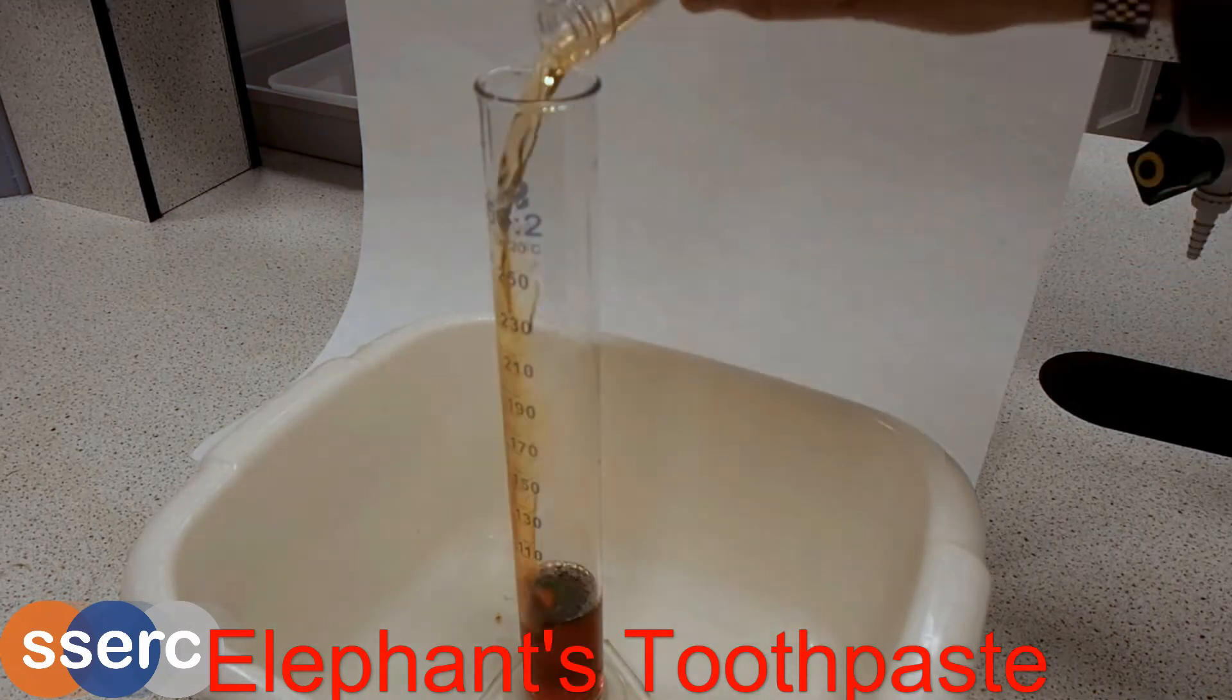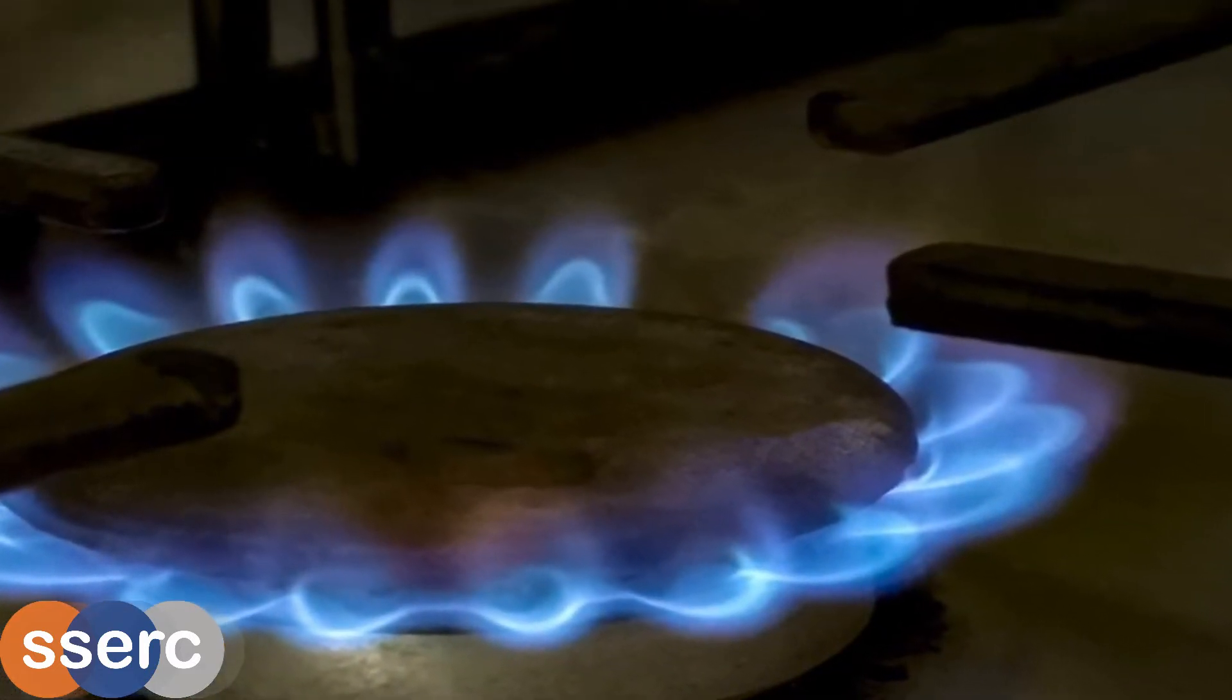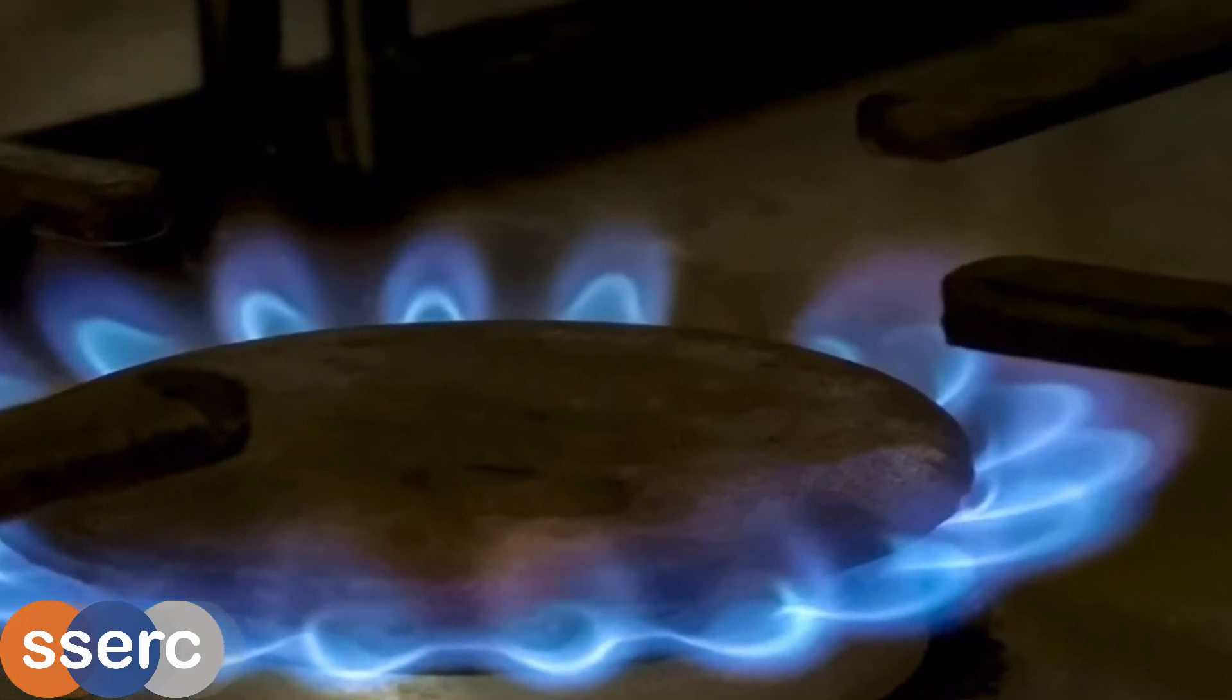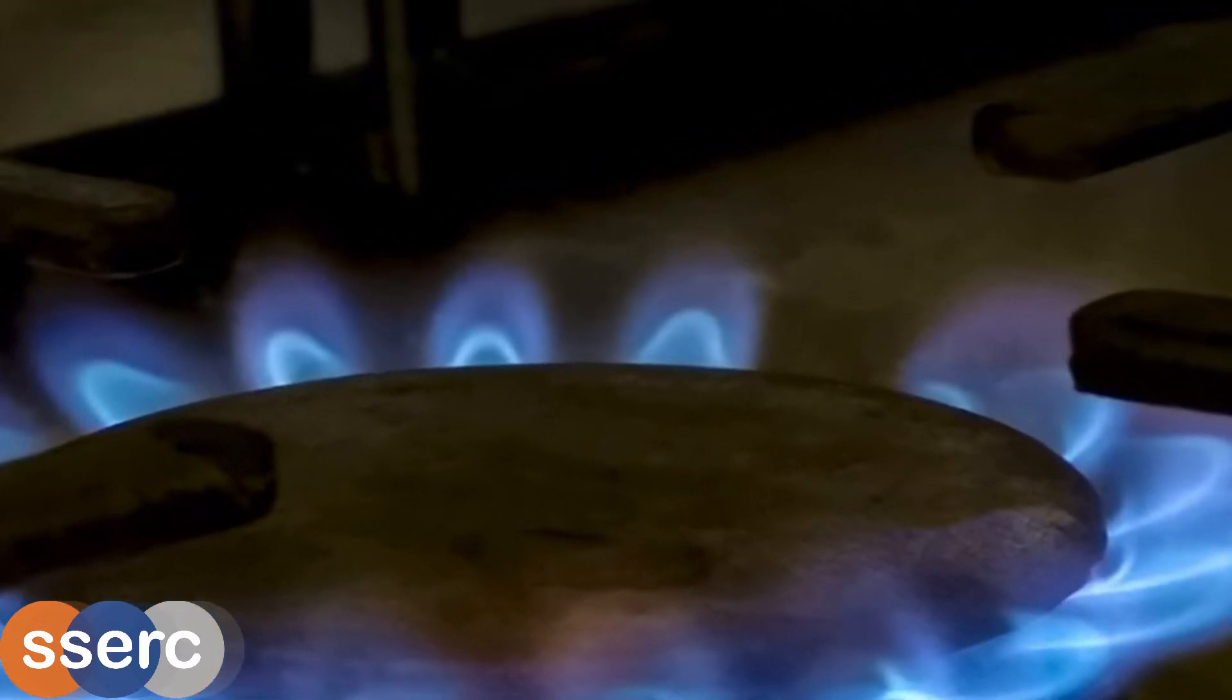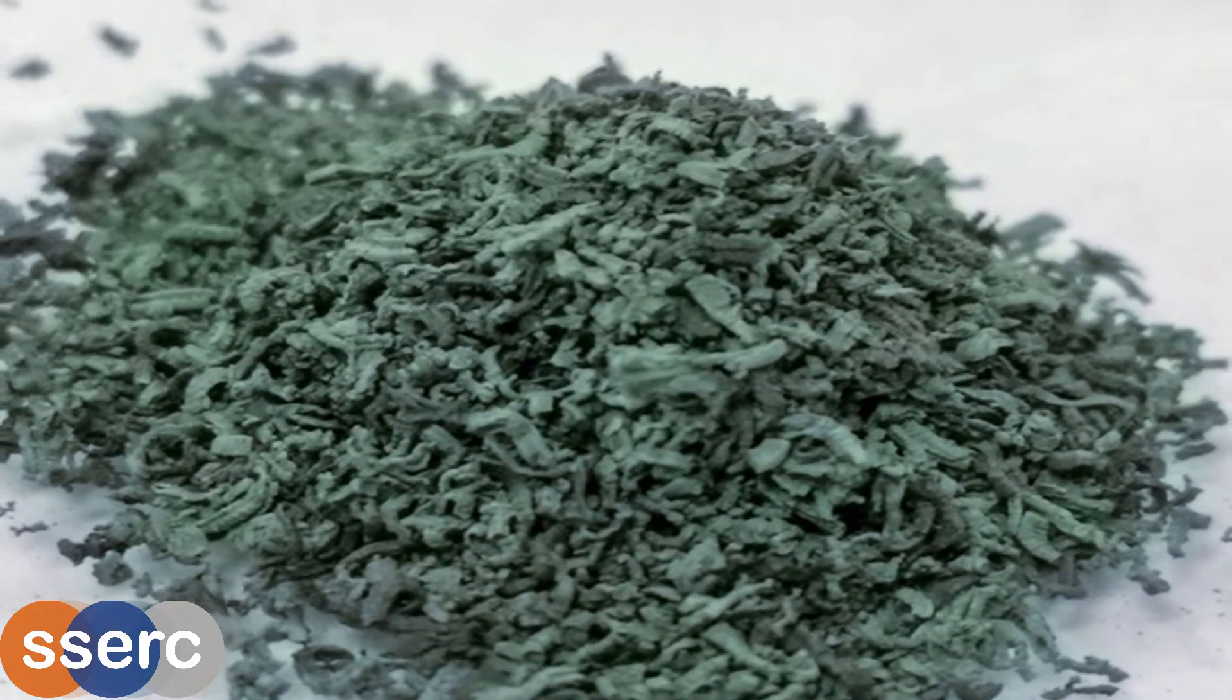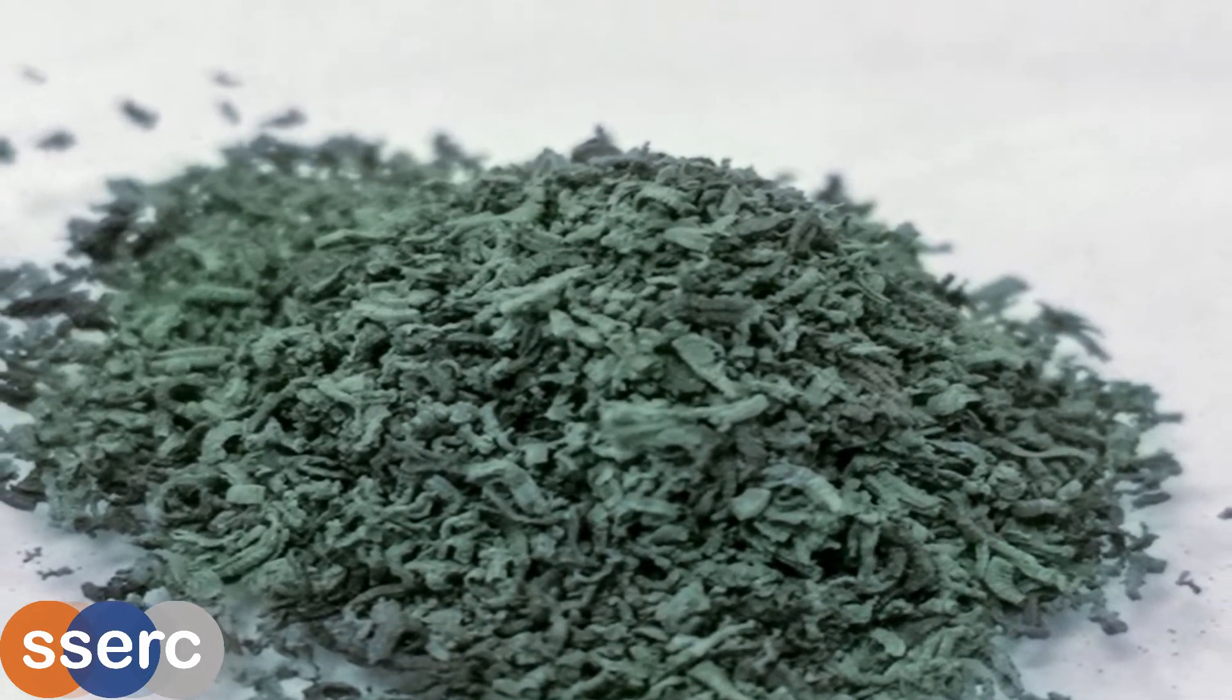There are many reactions that can be used to demonstrate the action of catalysts. This particular one is a little unusual in that it visualizes the catalysis of a reaction between gases. It uses chromium oxide to catalyze the oxidation of ammonia to nitric oxide, producing heat and a striking display of sparks.